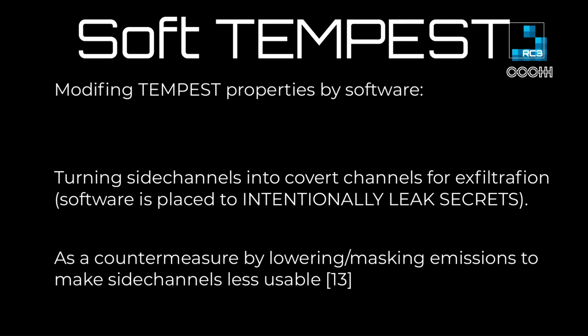What is Soft Tempest? Soft Tempest is modifying Tempest properties by software placed on a device. For example, this software could use side channels to intentionally leak some secret from that device. Or it could also be used as a countermeasure — software that lowers or masks emissions so adversaries are less able to receive those signals.